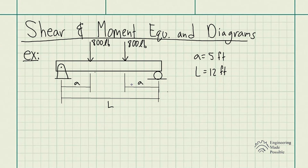The problem statement is: draw the shear and moment diagrams for the beam in terms of the parameters shown, as well as when the parameters are set to P equals 800 pounds, A equals 5 feet, and L equals 12 feet. P is the 800 pounds already drawn in.